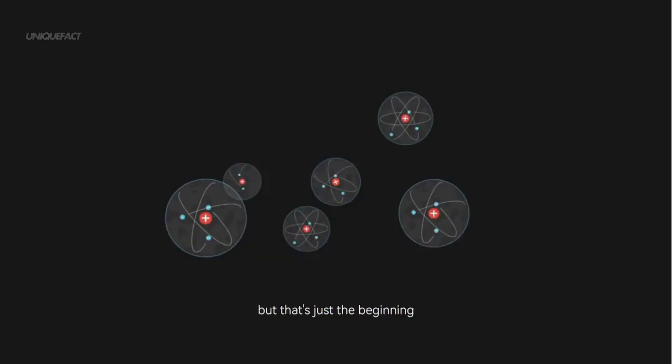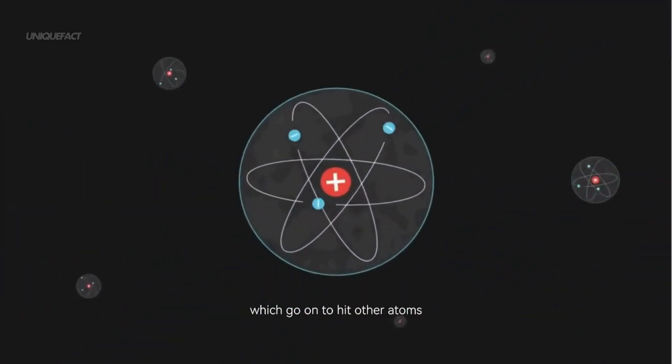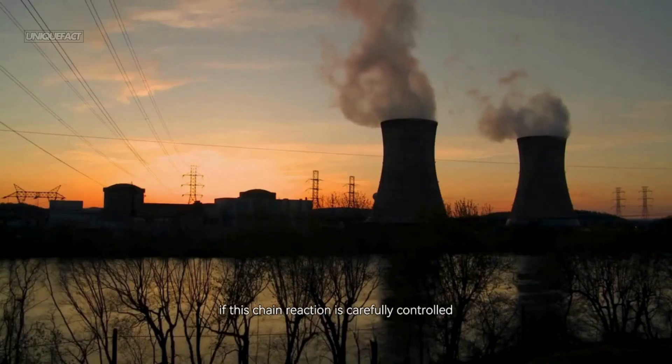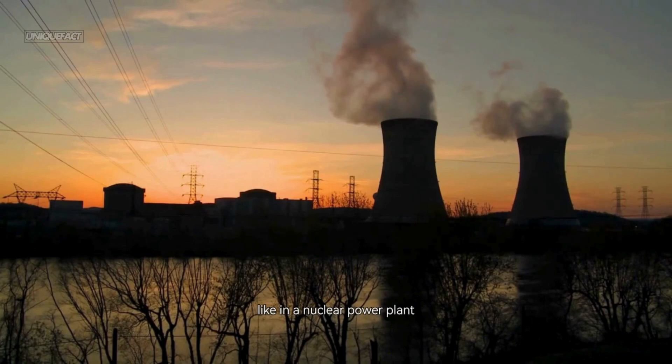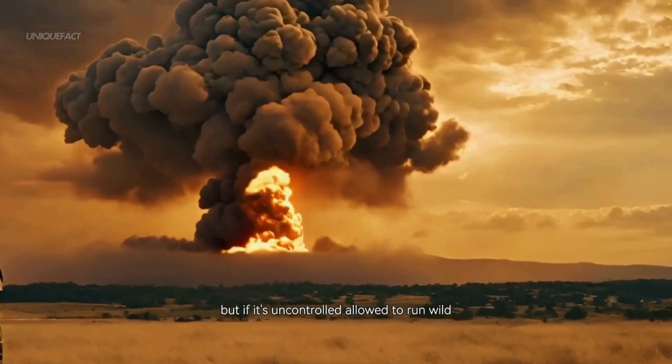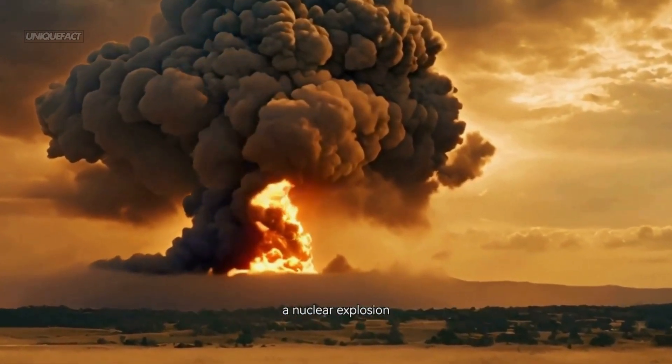But that's just the beginning. When the atom splits, it also releases more neutrons which go on to hit other atoms, splitting them too. This is called a chain reaction. If this chain reaction is carefully controlled, like in a nuclear power plant, it produces steady heat to generate electricity. But if it's uncontrolled, allowed to run wild, it results in a massive, instantaneous energy release - a nuclear explosion.